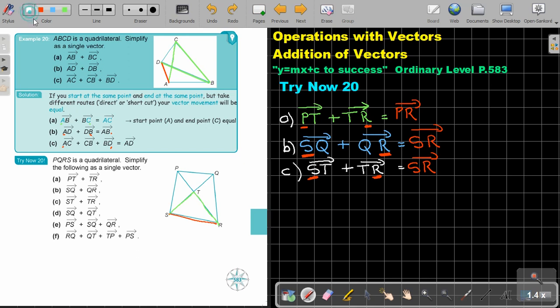This will be number D. It will be SQ plus QT. It's coming back. What will be the final result? It will just be from S to T. Can you see that? It's the first and the last.